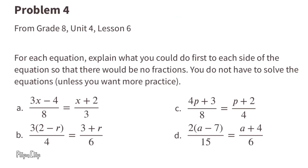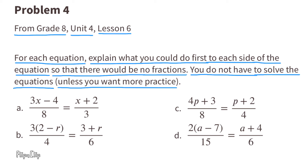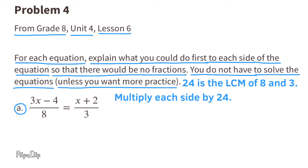Problem number 4 from 8th grade, Unit 4, Lesson 6. For each equation, explain what you could do first to each side so that there would be no fractions. You do not have to solve the equations unless you want more practice. Equation A: 24 is the least common multiple of 8 and 3, so you could multiply each side by 24. That would get rid of the fractions, and the equation would look like 3 times (3x minus 4) equals 8 times (x plus 2).